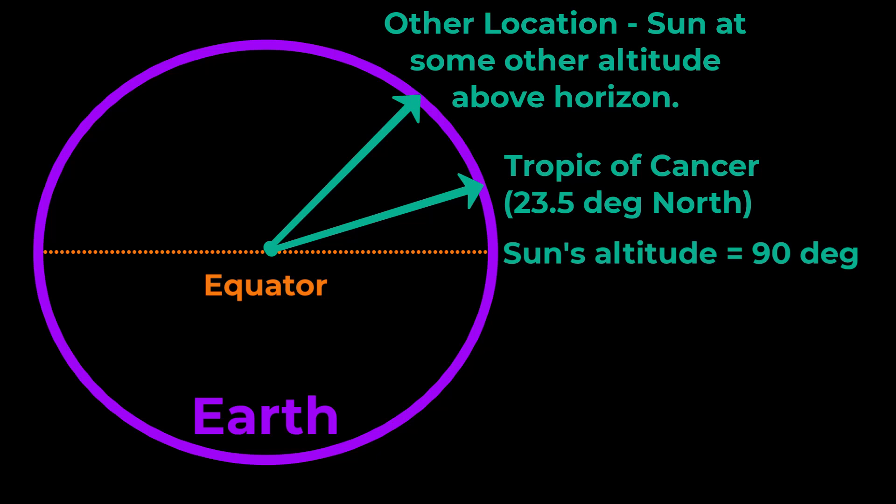Eratosthenes did some geometry which I'm going to skip the fine details of. And what he realized was that if you take the difference between these two altitudes the angle that you get is the same as this angle right here. Now why is that important? Watch this.